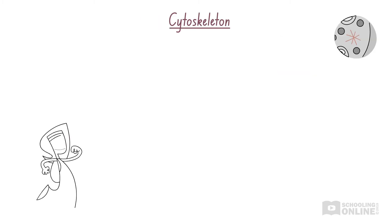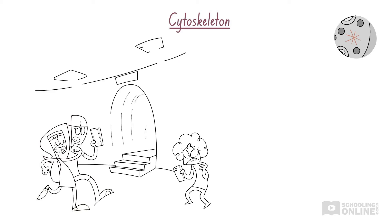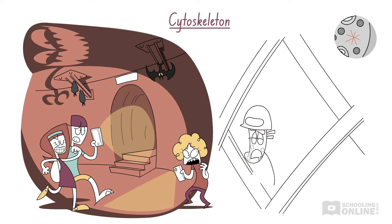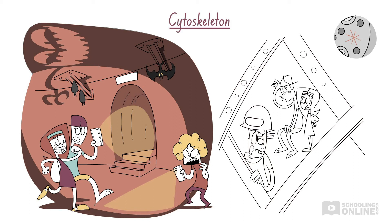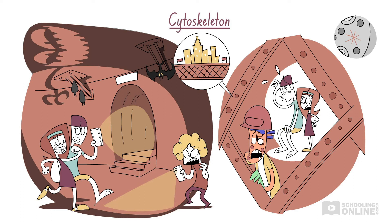Sally has heard spooky stories about the secret underground tunnels in Zoo York, so she decides to explore them. Instead of ghosts, she discovers metal beams and sleepy construction workers, who tell her that the metal beams form the foundations of the city, providing structural support for all the buildings. Sally notices that the series of metal beams, which run through the entire city, resemble the cytoskeleton. While the metal framework provides structural support to all the buildings, the cytoskeleton provides structural support to an animal cell.